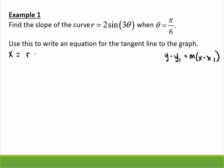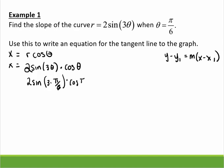x equals r cosine of theta. So x is equal to r which is 2 sin(3θ) times cosine of theta. Now I plug in, I knew that was going to happen. So I plug in π/6, when I plug in π/6, I get the value of root 3. All right, so now I know what my x value is.